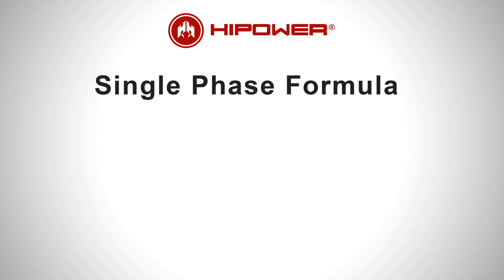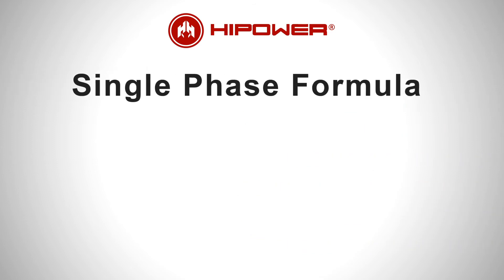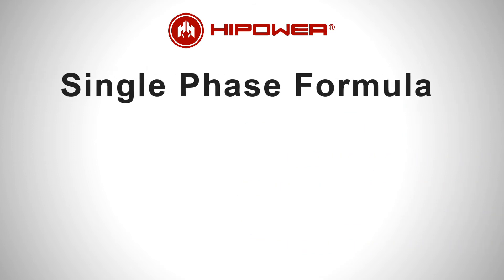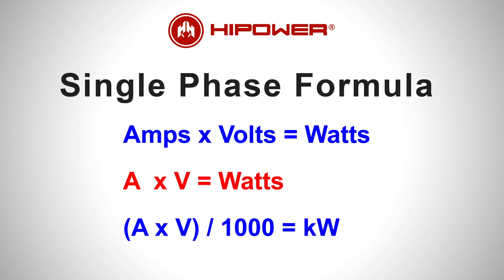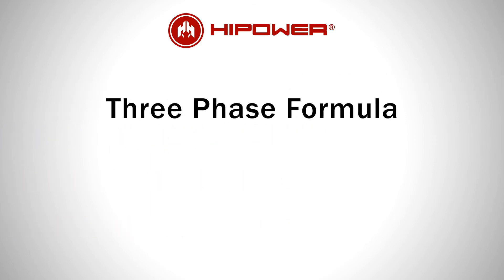The first formula to note is for a single-phase generator. For single phase, the total kilowatts is a function of amps and volts. Amps (A) times volts (V) equals watts (W). Dividing the watts by 1000 gives you the kilowatts.